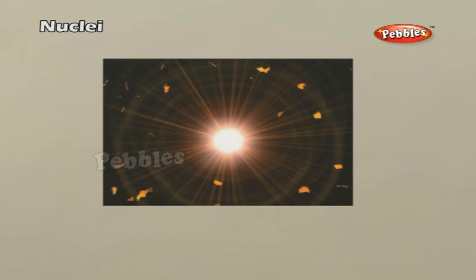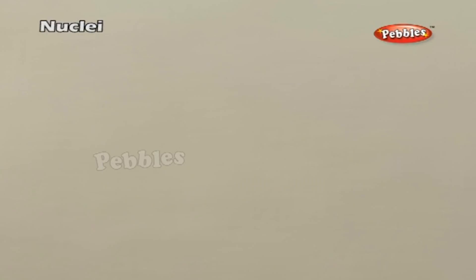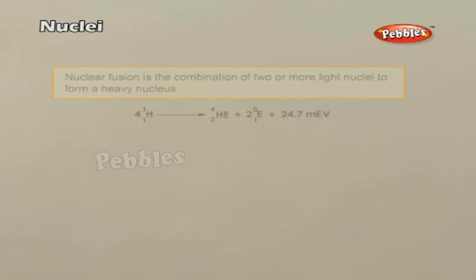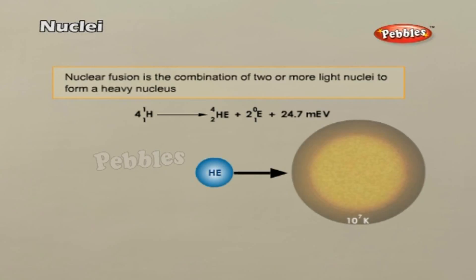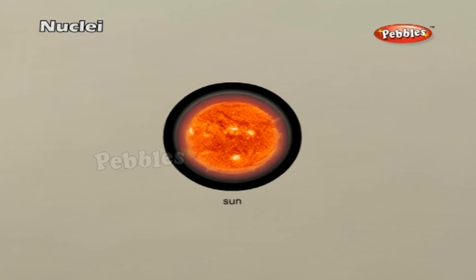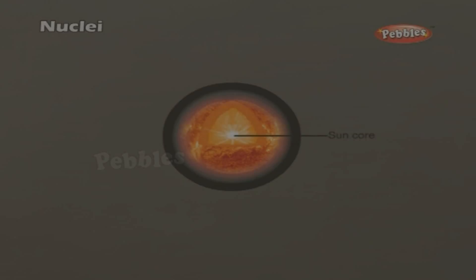Nuclear fusion. Nuclear fusion is a process in which two light nuclei fuse together to form a heavier nucleus and energy will be released. Nuclear fusion takes place at very high temperature to the order of 10 to the power 7 Kelvin. Hence, nuclear fusion reactions are also known as thermonuclear reactions. Nuclear fusion is the type of reaction taking place inside the sun. Hydrogen bomb is based on the principle of fusion.